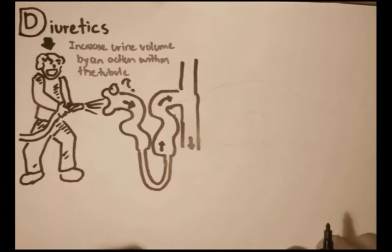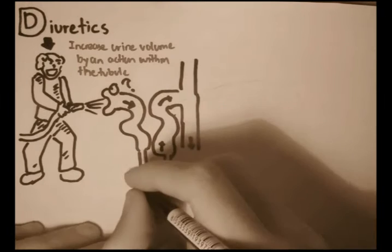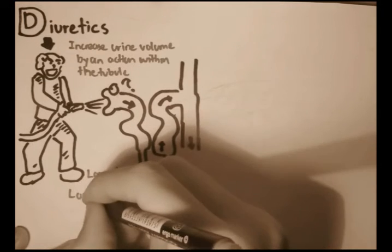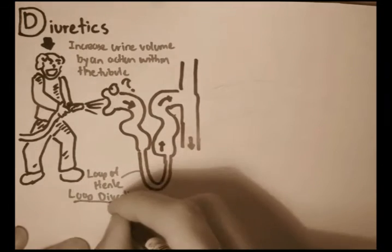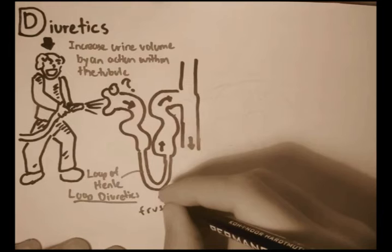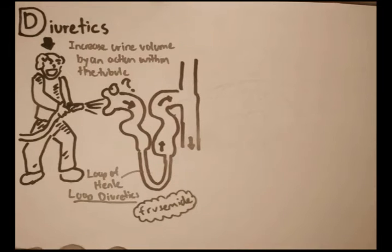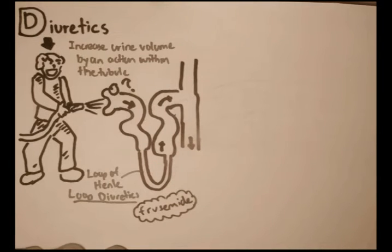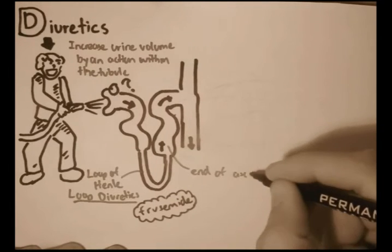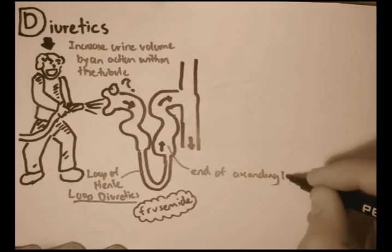Now there are many types of diuretics which affect many places in the tubules of the nephron, but we'll talk about two. One that affects the loop of Henle, called the loop diuretics. An example of loop diuretics is furosemide. And another type of diuretics we're going to talk about is the one that affects the end of the ascending loop of Henle, known as thiazides.